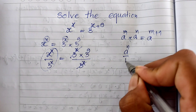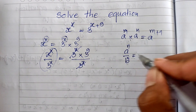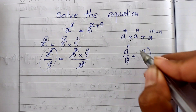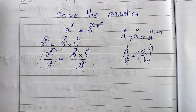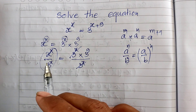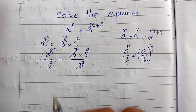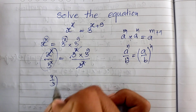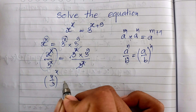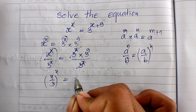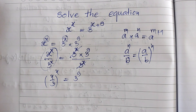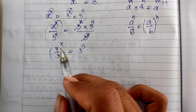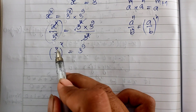Using the rule that a power n divided by b power n equals (a divided by b) power n, I can write this equation as: (8 divided by 3) power H equals 3 power 9. Now I have (8/3) raised to the power H on the left side.